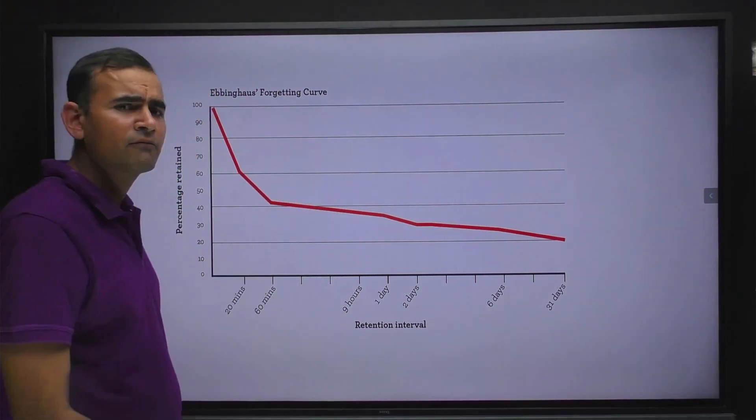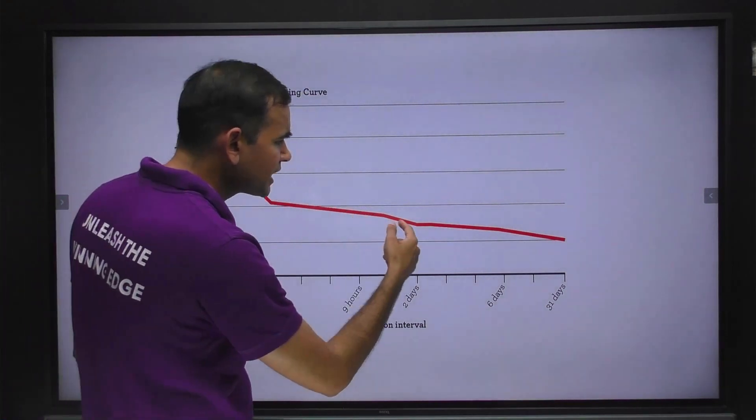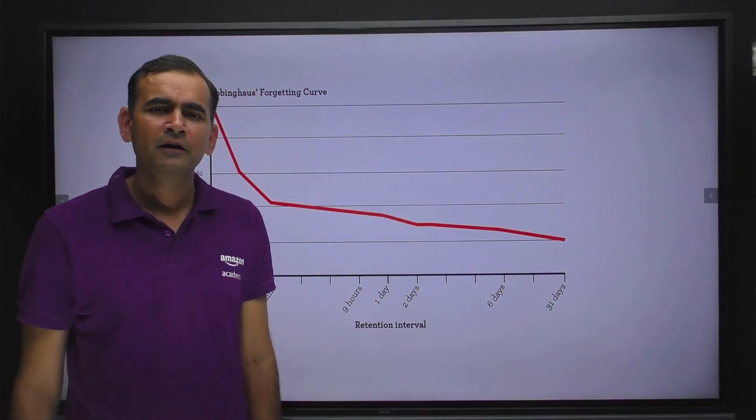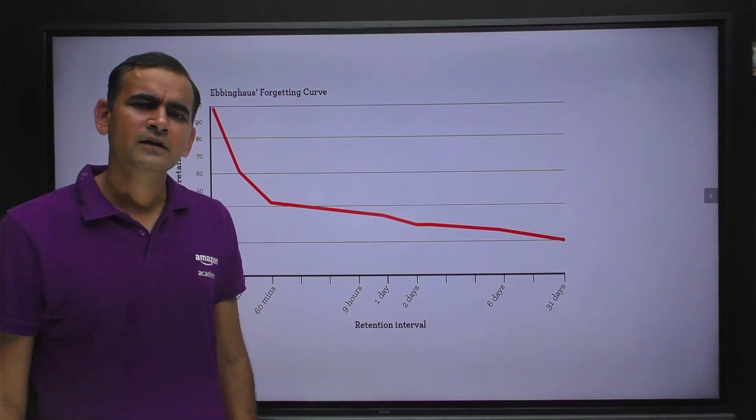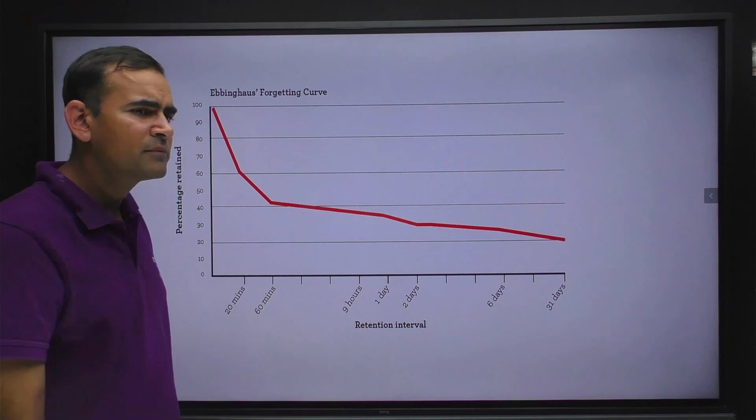It looks like a simple curve, but let me tell you, my dear friends, it is actually Ebbinghaus's forgetting curve. Yes, it tells you how much information is retained by your brain after certain intervals of time. Suppose you revise a chapter today, then after one day your brain is going to retain 33 percent information from that chapter.